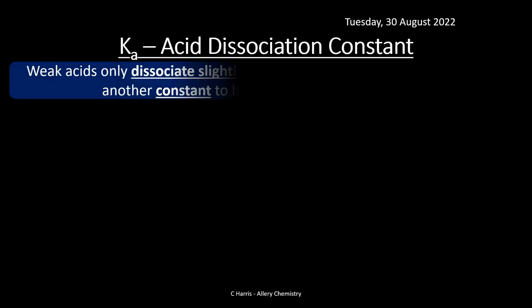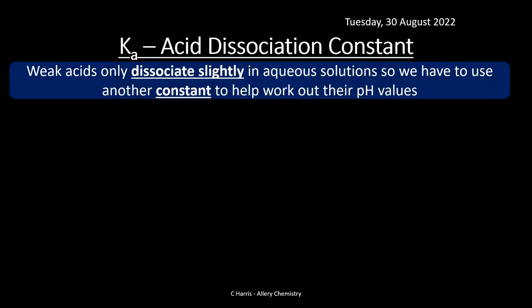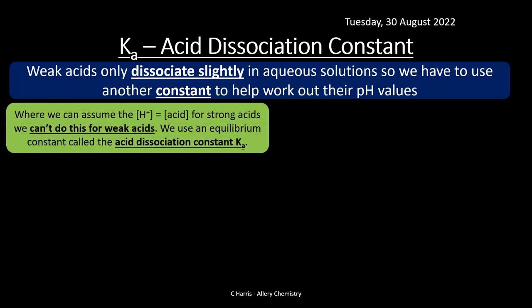We've looked at strong acids and strong bases, but now we introduce a different constant: the acid dissociation constant, Ka. Ka is used when we don't have a strong acid — in other words, we're using a weak acid instead. Weak acids only dissociate slightly; strong acids dissociate fully. In an aqueous solution we have to use this different constant to work out their pH values.